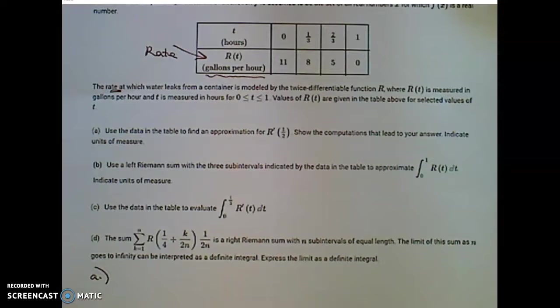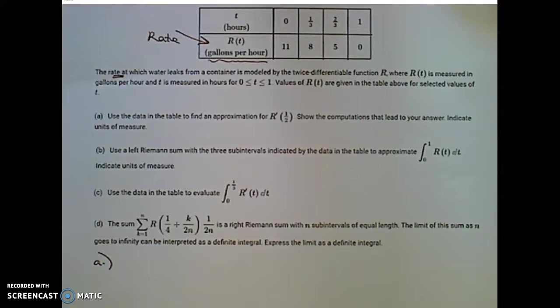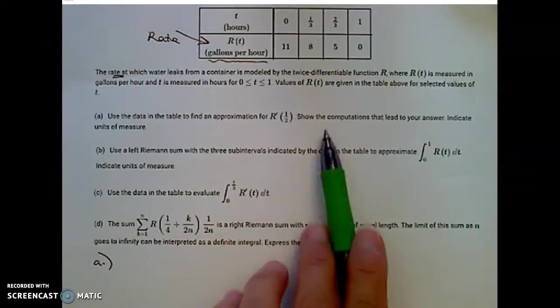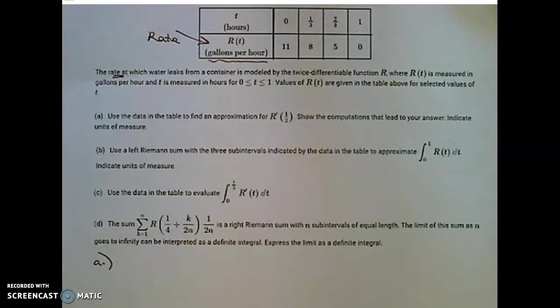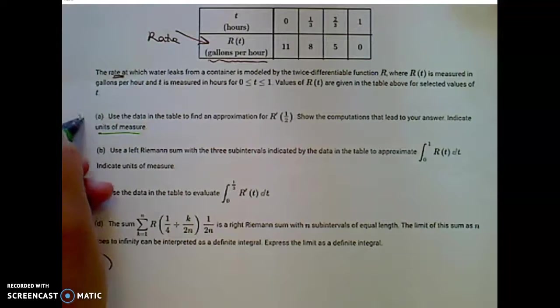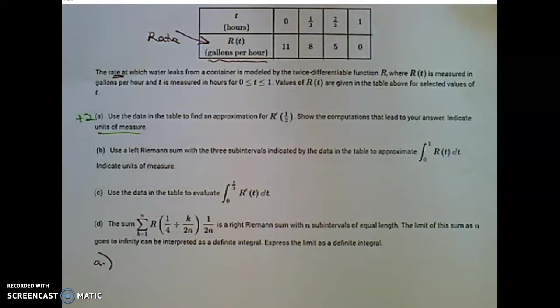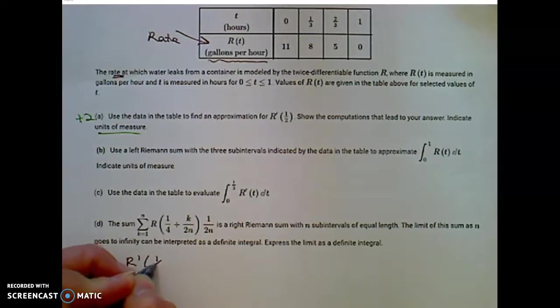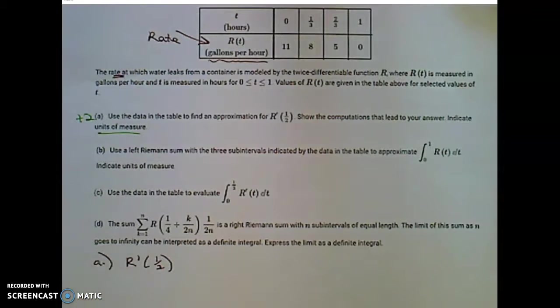Let's read part A. Use the data in the table to find an approximation for R prime of 1 half. Show the computations that lead to your answer and indicate units of measure. Part A is for two points. And we need to find R prime of 1 half.